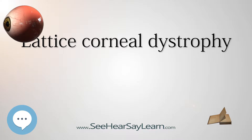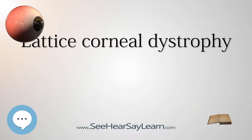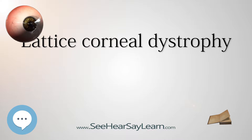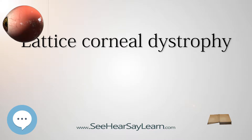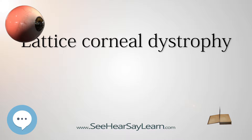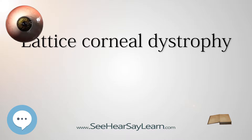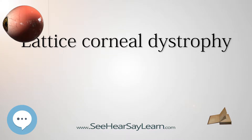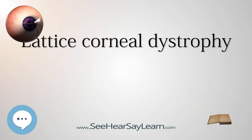Lattice corneal dystrophy was first described by Swiss ophthalmologist Hugo Biber in 1890. Lattice dystrophy gets its name from an accumulation of amyloid deposits, or abnormal protein fibers, throughout the middle and anterior stroma.